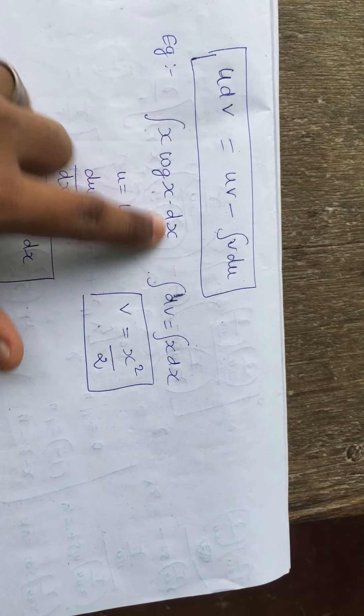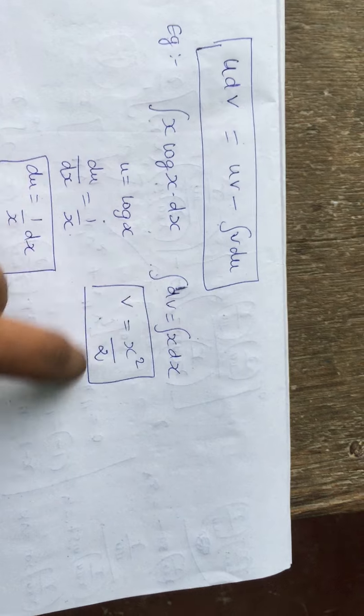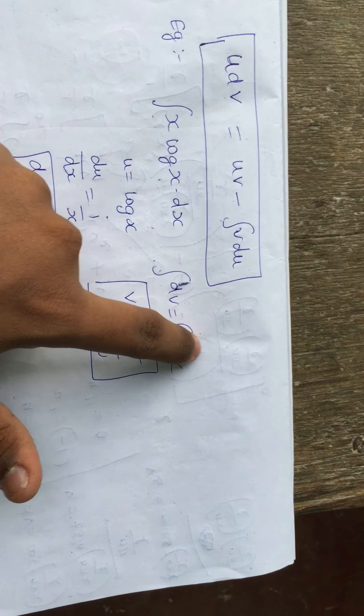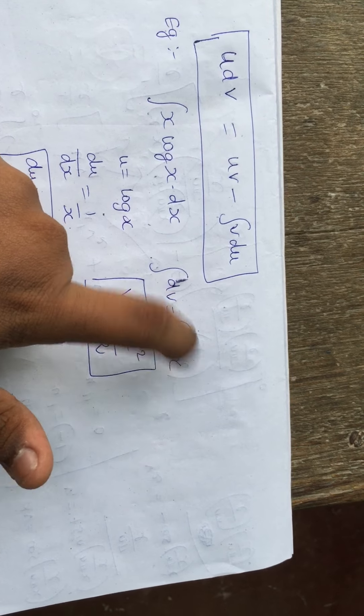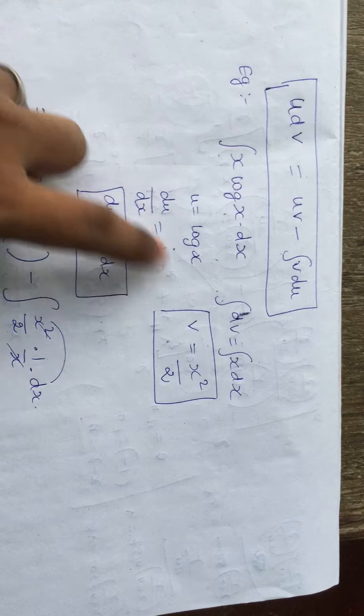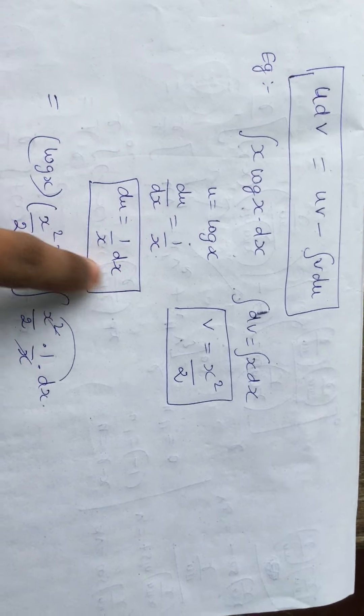Then I take dv equal to x dx. For this term I want to integrate to find v. Integrating x dx, the exponent is 1, so 1 plus 1 is 2, and put that 2 in the denominator also. So v equals x squared by 2.